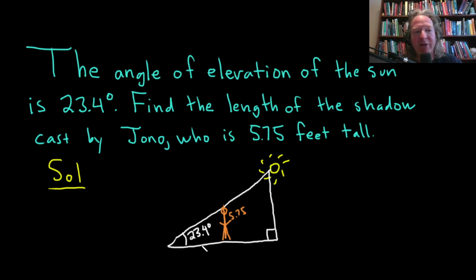We have to find the length of his shadow, which I'll highlight here in red. He casts a shadow because the Sun is over here. We're looking for, let's call it X, the length of the shadow cast by Jono.